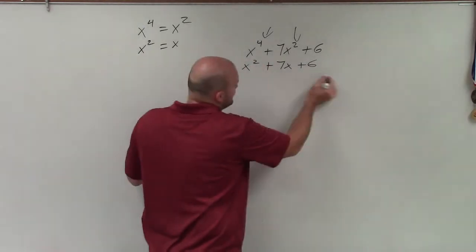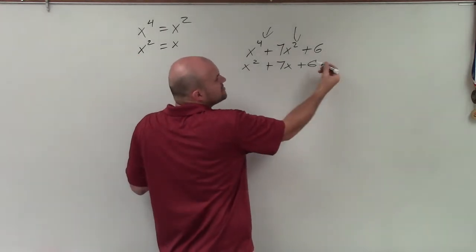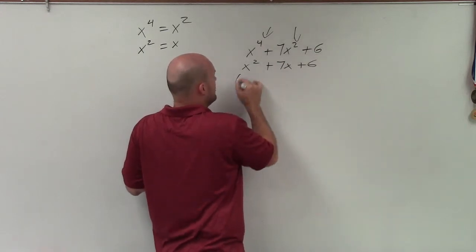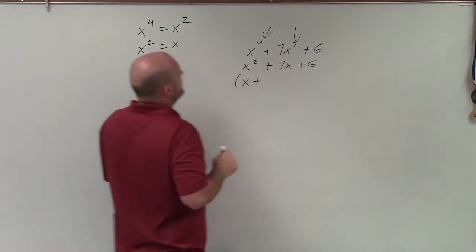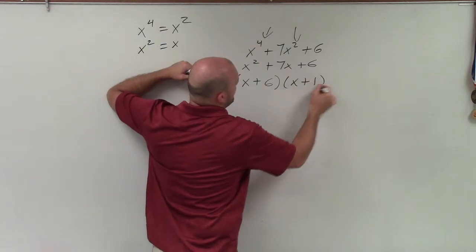So I'm going to rewrite it as a trinomial that I'm a little more familiar with. And then I say, all right, so to factor this, what two numbers multiply to give me 6, add to give me 7? That's going to be the factors of 6 and 1. So therefore, I can write this as x plus 6 times x plus 1. OK.